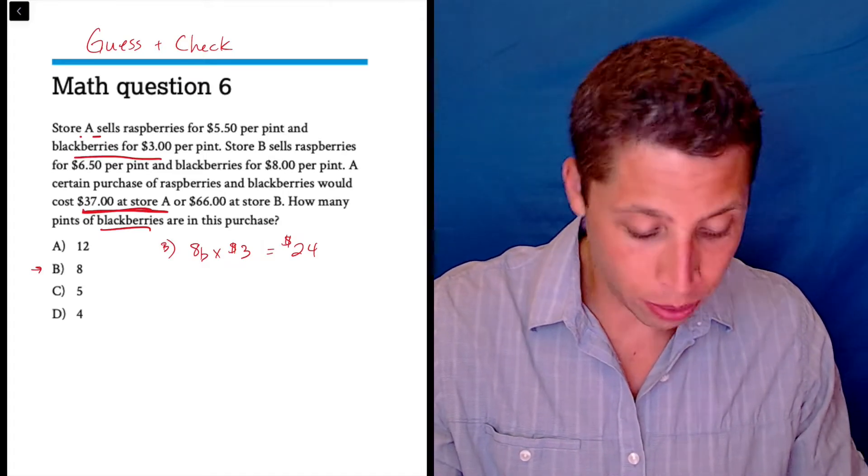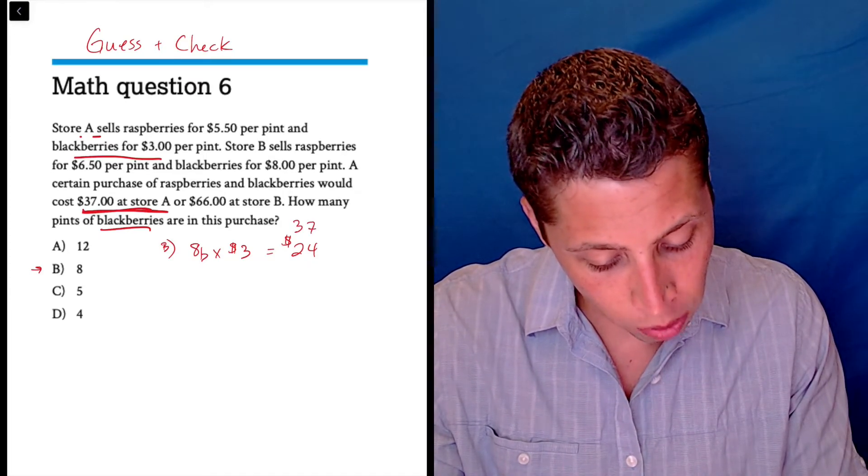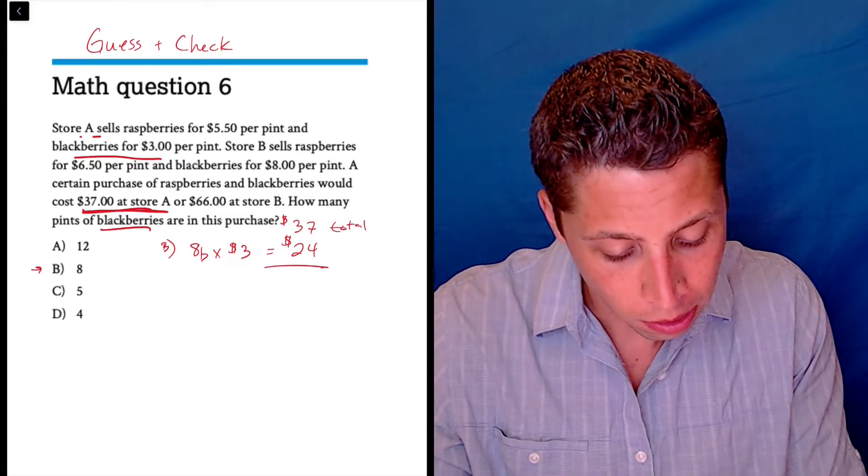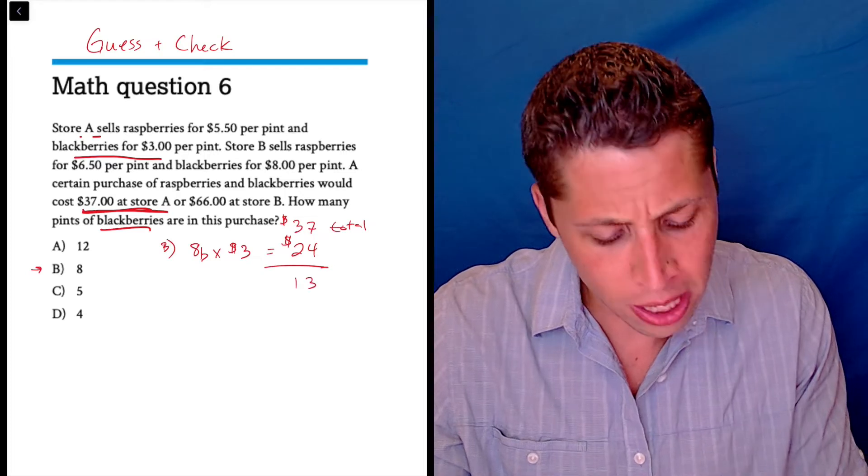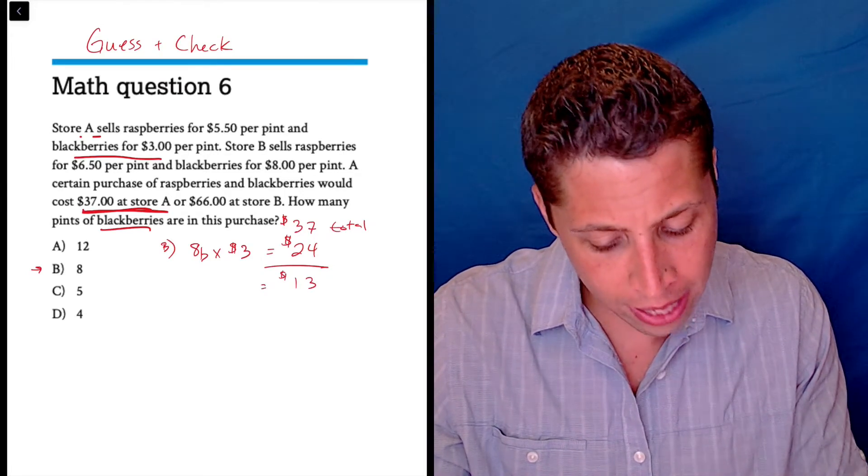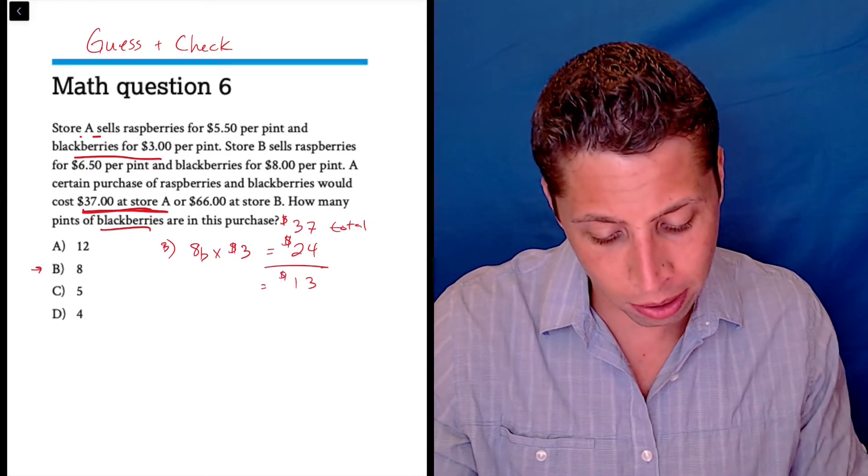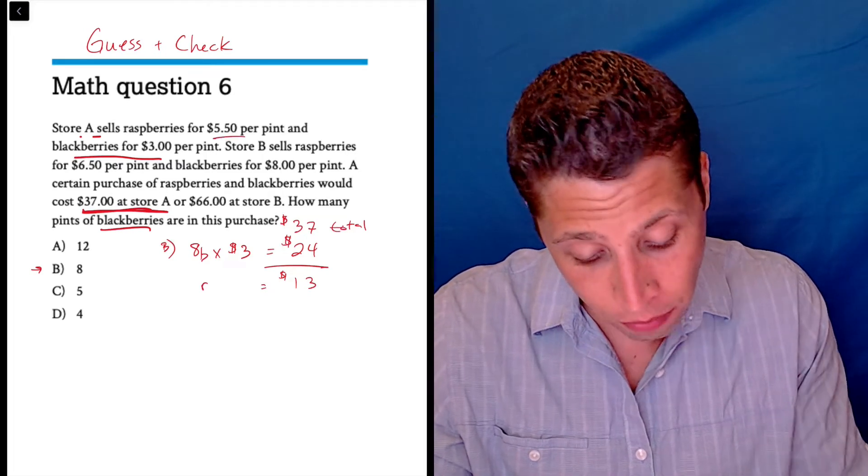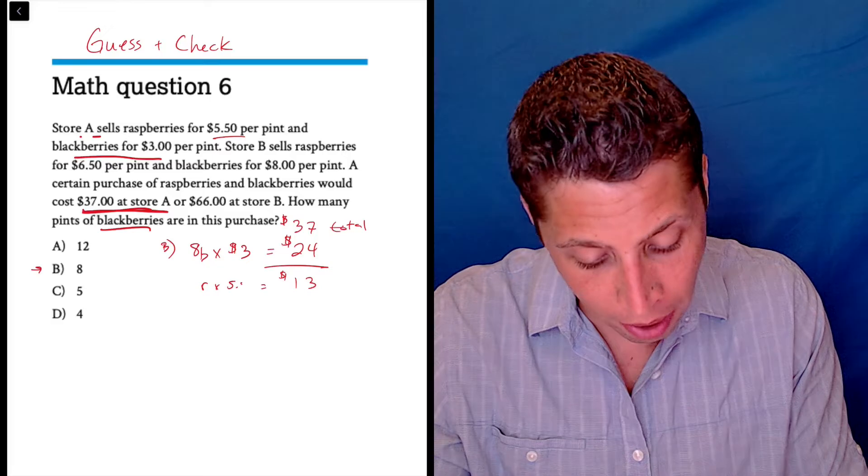So, okay, we can do a little subtraction here. So if I subtract the 24 in blackberries from the 37 total, that's $13. And that is some amount of raspberries. And raspberries are $5.50 a pint. So times $5.50.